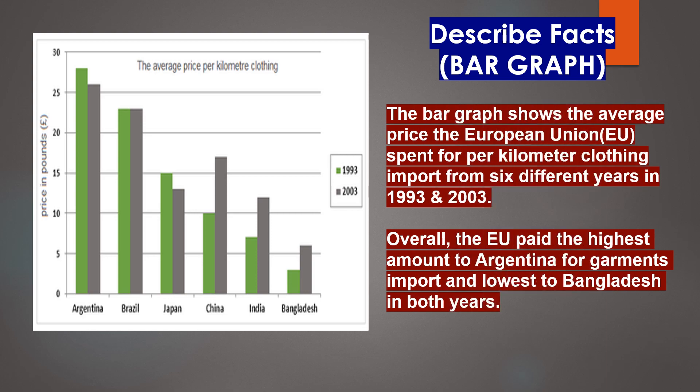Now let's take a look at this bar graph. The bar graph shows the average price the European Union spent per kilogram for clothing imports from six different countries in 1993 and 2003. Overall, the EU paid the highest amount to Argentina for garments import and the lowest to Bangladesh in both years.